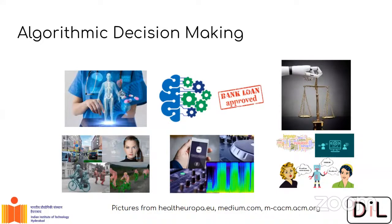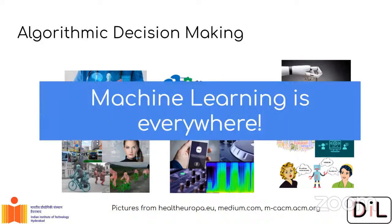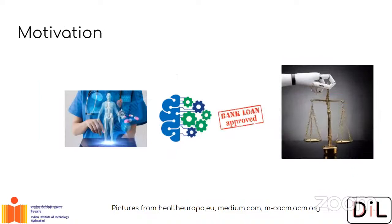Think of computer vision applications like autonomous vehicles — they all use machine learning and deep learning. The summary is: machine learning is everywhere today, and in the near future it will take over even more spaces and interact with more people on a daily basis. Some of these applications are very critical. Some may not be — for example, if Alexa misrecognizes a song request, that's not very critical and you're just a bit irritated.